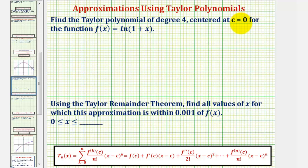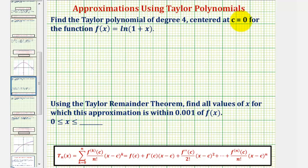Because the Taylor polynomial is centered at zero, we could call this a Maclaurin polynomial. Looking at the definition for our Taylor polynomial centered at c, we could change all the c's to zero, and instead of having the quantity x minus c, we would just have x raised to the appropriate power. Because we want the degree four Taylor polynomial, we need to find the first four derivatives and evaluate those functions at zero. Let's do this on the next slide.